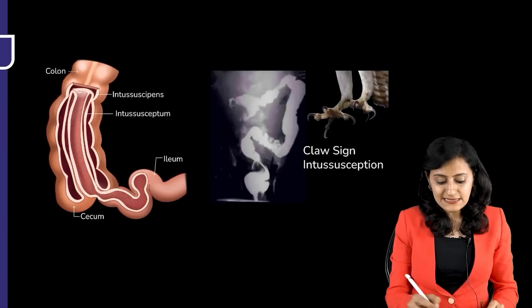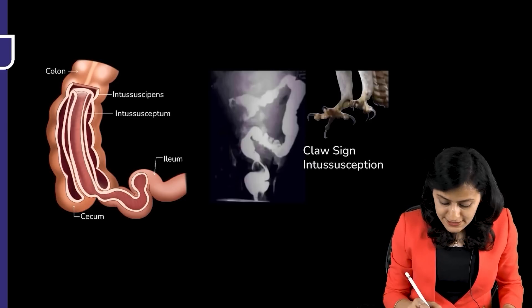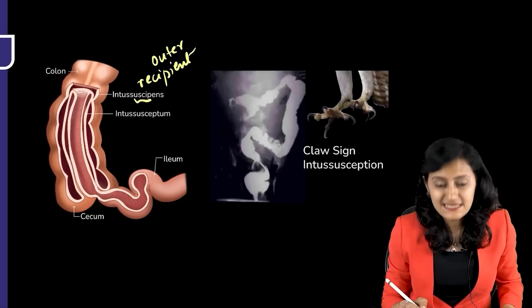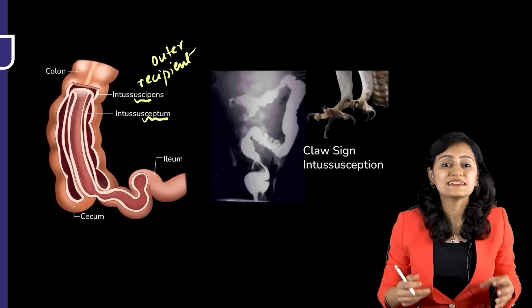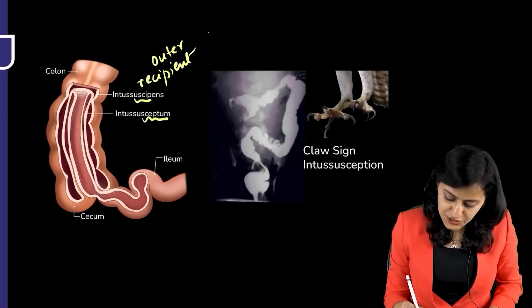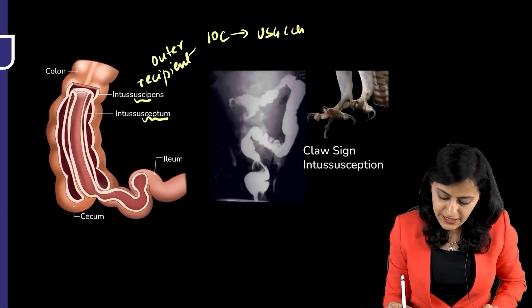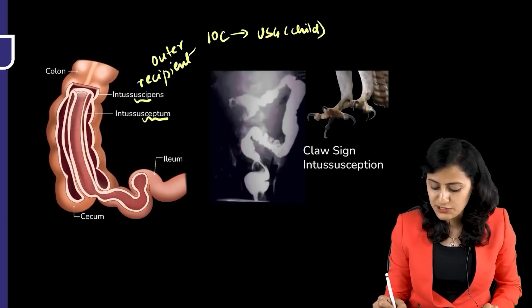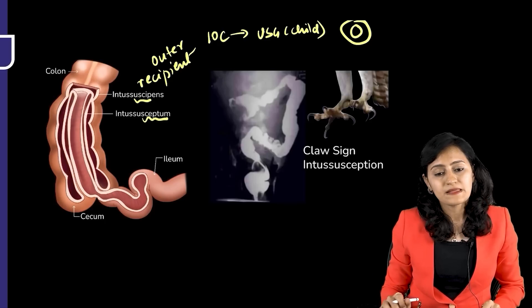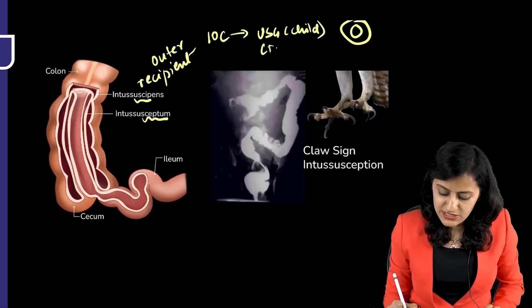The outer bowel is called the intussuscipient (the recipient), and the inner bowel going inside is the intussusceptum. The investigation of choice in children is ultrasound — no radiation, identifies the bowel-within-bowel appearance as the target sign or donut sign. In adults, CT scan can be used as visualization may be difficult on ultrasound.